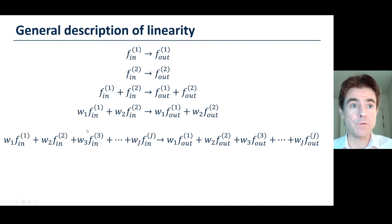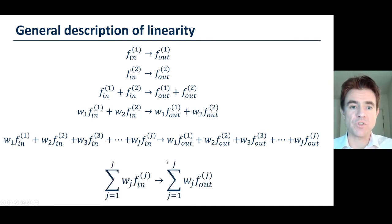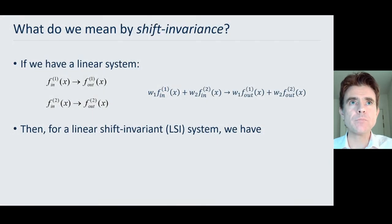Extending that even further, we could add together capital J different images with different weighting factors w1, w2, and so on up to w capital J, and then the output predictably would just be equal to the sum of all the individual outputs with the respective weighting factors. Succinctly then, for a linear system, we could just add together a weighted collection of input functions, and the output would just be the same weighting factors for all of the individual outputs just added together. This is really intuitively what we would naturally expect of a system, but not true for non-linear systems.